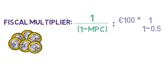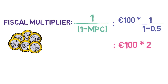In our case, there was 100 euro put into the economy. We multiply this by the multiplier: one over one minus 0.5 — the 0.5 being the marginal propensity to consume, how much people were spending out of extra income. This gives us 100 euro multiplied by two — the fiscal multiplier after working out our formula.